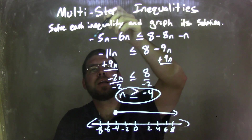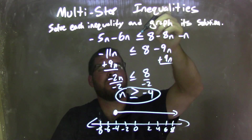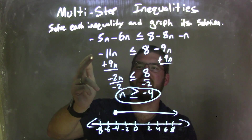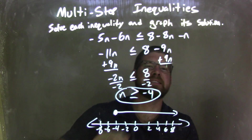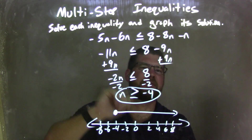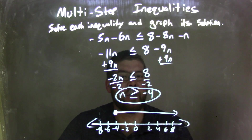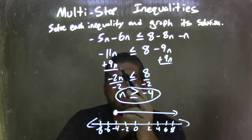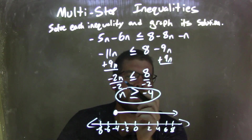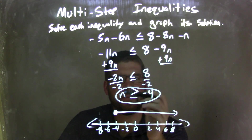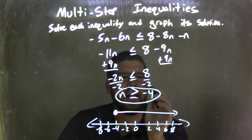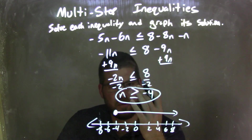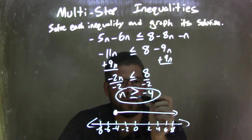So let's recap. We're given negative 5n minus 6n is less than or equal to 8 minus 8n minus n. I combine my like terms on each side, giving me negative 11n on the left and 8 minus 9n on the right. I add 9n to both sides, giving me 8 by itself on the right and negative 11n plus 9n, which is negative 2n, on the left. I then divide by negative 2 on both sides, giving me n by itself on the left and negative 4 on the right. But since I divided by a negative over the inequality, we need to flip that inequality from a less than or equal to sign to a greater than or equal to sign.